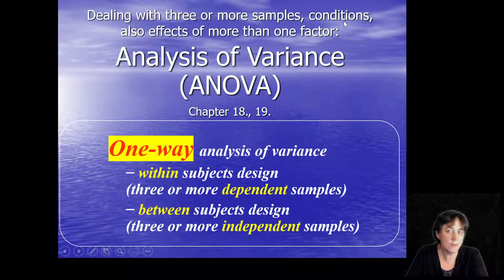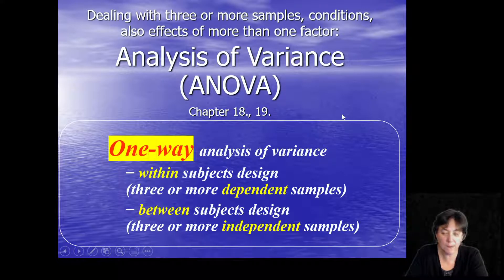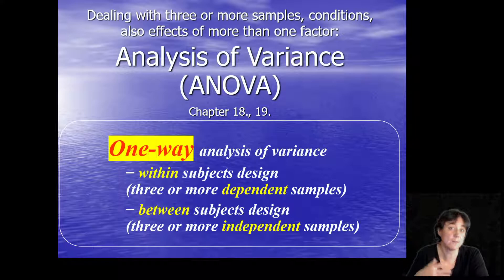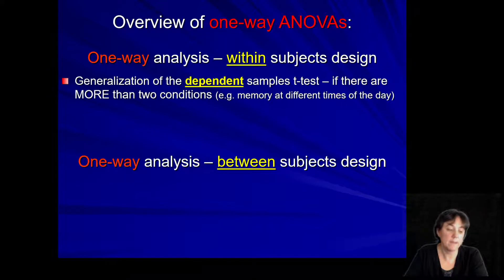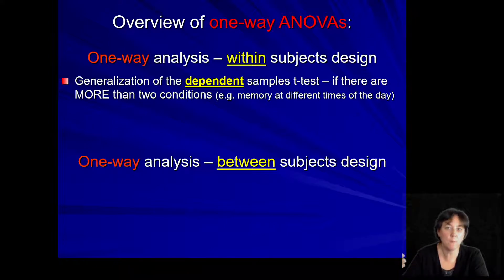This should ring a bell — similarly to the independent and paired samples t-tests, the one-way ANOVA, which is short for analysis of variance, will similarly compare the means of different groups or conditions. An overview: first the within-subjects design, where we have dependent or paired samples, but here it's more than one condition, so we call them within-subjects.